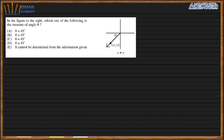In the figure, which of the following is the measure of angle theta — is it less than 45 or greater than 45? We are told x is not equal to y. When x equals y, the angle is always 45. Since x and y are not equal, either x is greater than y or x is less than y, so we don't know whether theta is greater than or less than 45. We cannot decide.